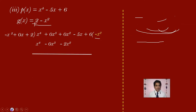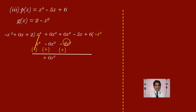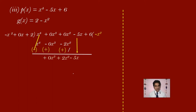Do the subtraction — change the signs: x power 4 becomes minus x power 4, minus 0x cube becomes plus 0x cube, minus 2x square becomes plus 2x square. x power 4 and minus x power 4 cancel, giving 0. You have 0x cube. 0 plus 2 gives plus 2x square. Carry minus 5x. The first term in the new dividend is 0x cube, and the divisor's first term is minus x square.